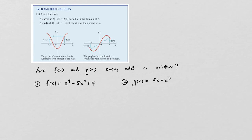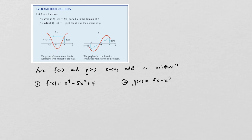The last concept we want to consider is the concept of an even and an odd function. An even function is a function in which f(-x) = f(x). So whatever the function value is at a particular value of x, you get the same function value at f(-x). Graphically, what it means is you have symmetry across the y-axis.